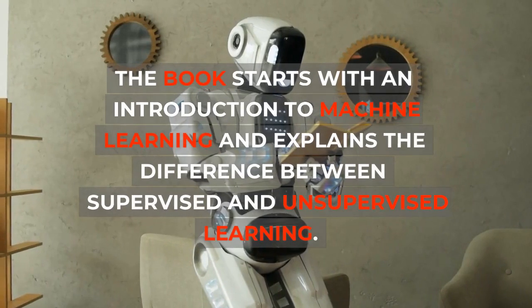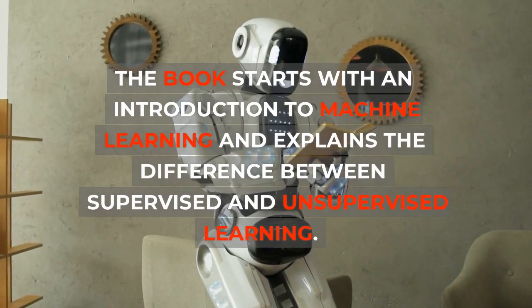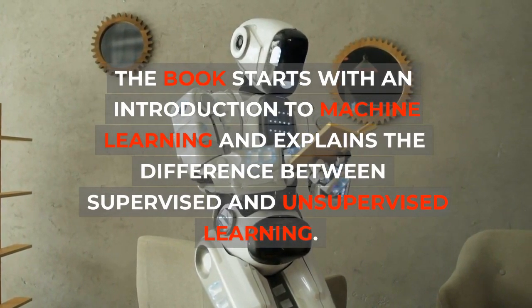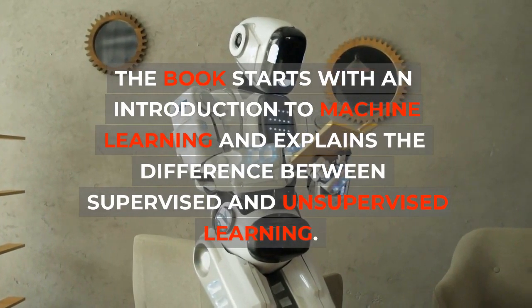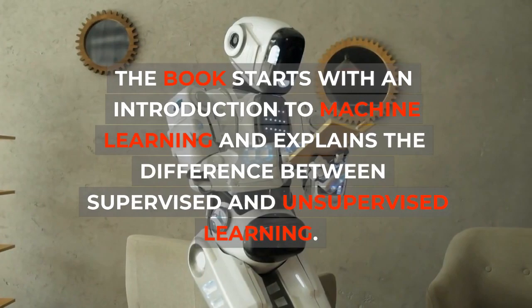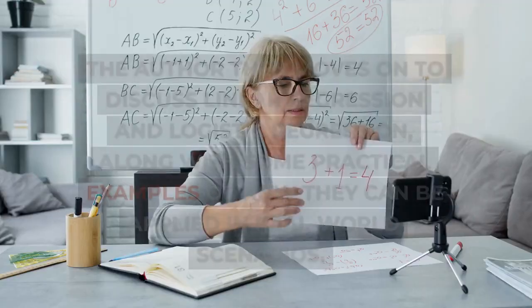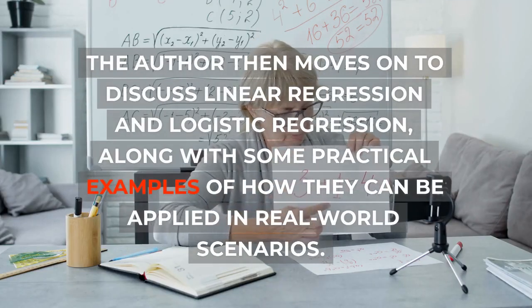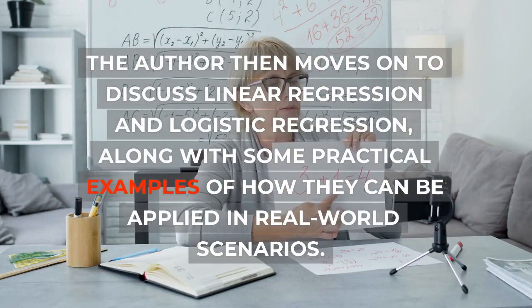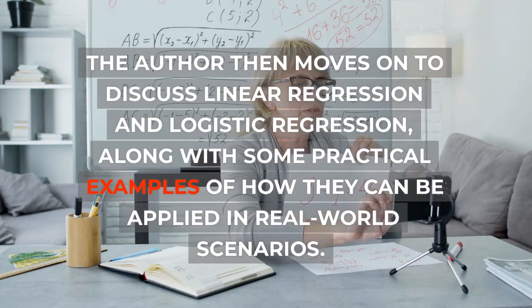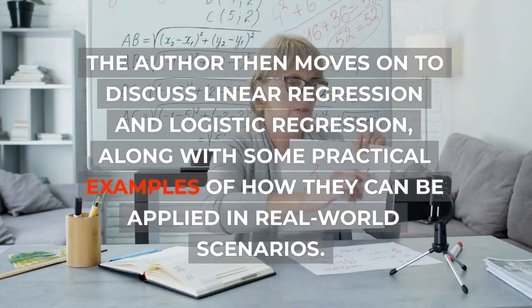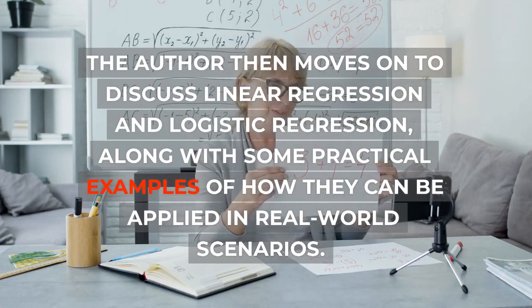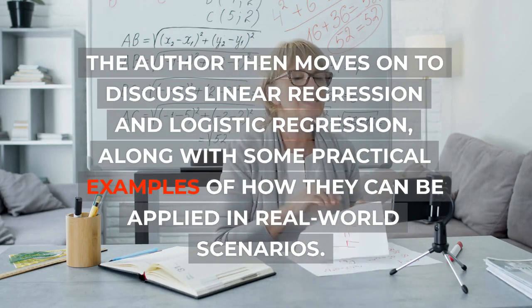The book starts with an introduction to machine learning and explains the difference between supervised and unsupervised learning. The author then moves on to discuss linear regression and logistic regression, along with some practical examples of how they can be applied in real-world scenarios.